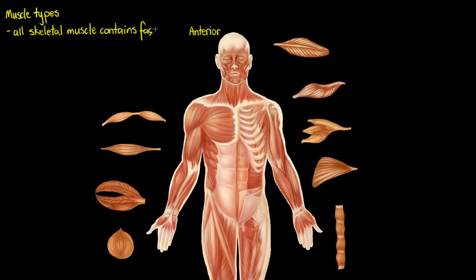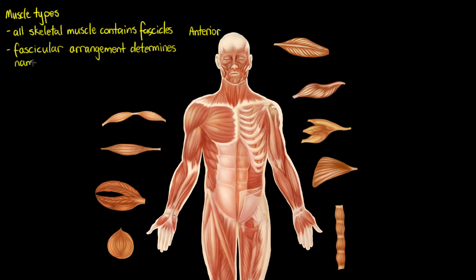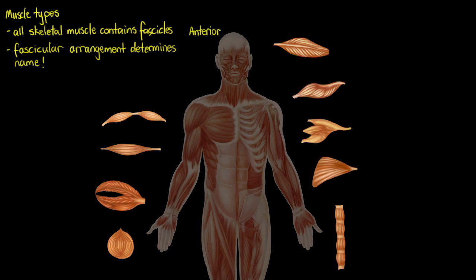All skeletal muscle is going to contain fascicles — the groups of your muscle cells themselves, or muscle fibers. The arrangement of these fascicles is going to determine how that muscle is capable of moving, and it will also determine the name.